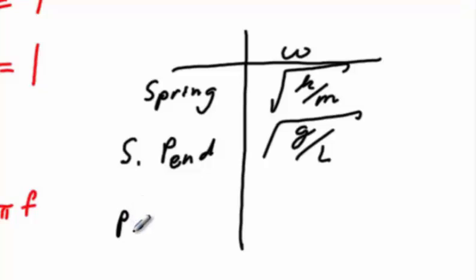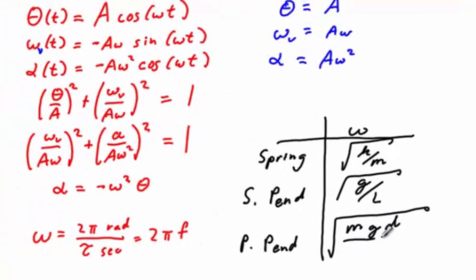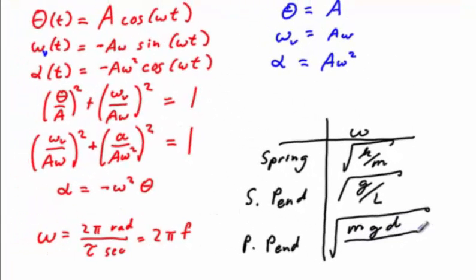And if we have a physical pendulum, as in the problem at hand, we will have the square root of MgD, where D represents the distance from the center of mass to the pivot point for the object, divided by the moment of inertia spinning around the current pivot point.